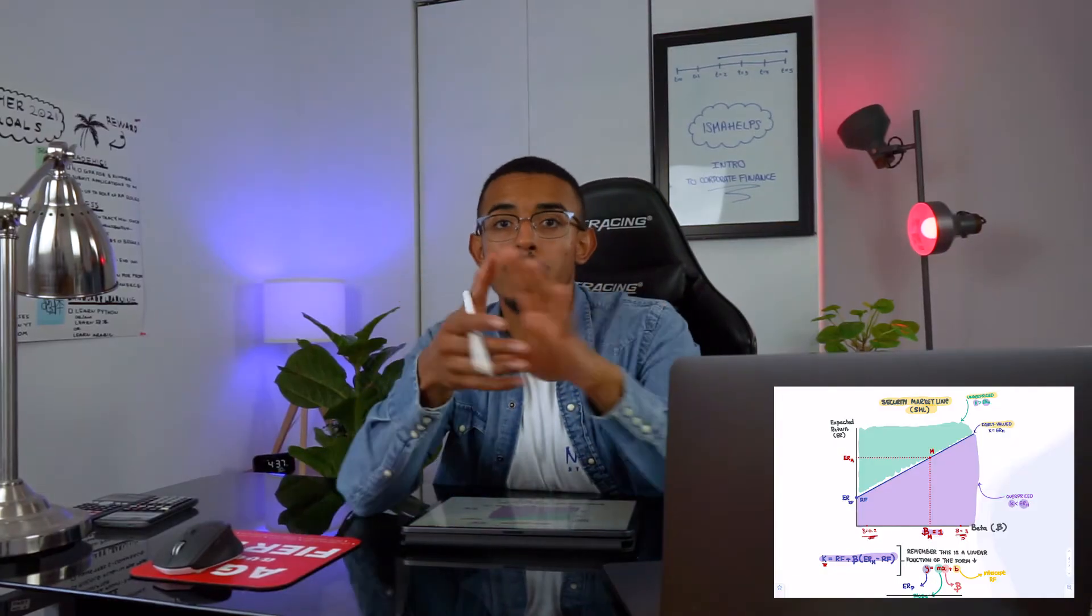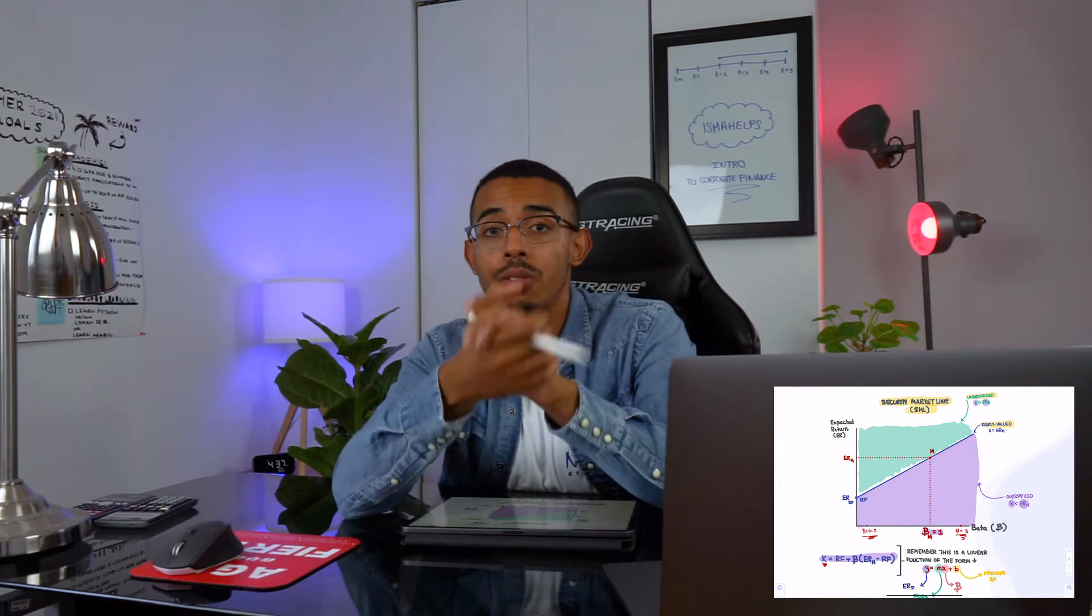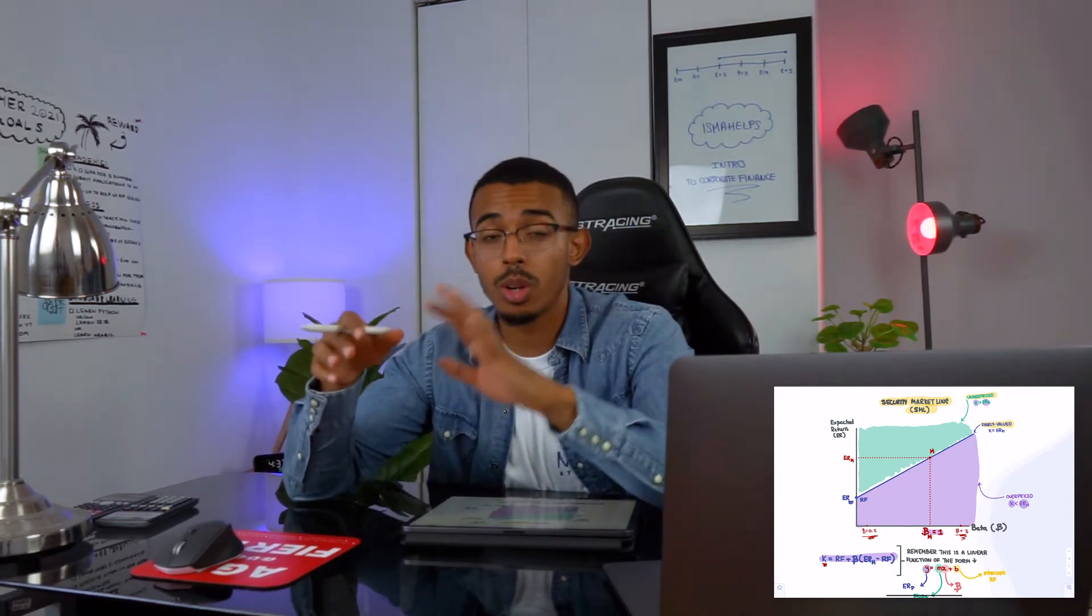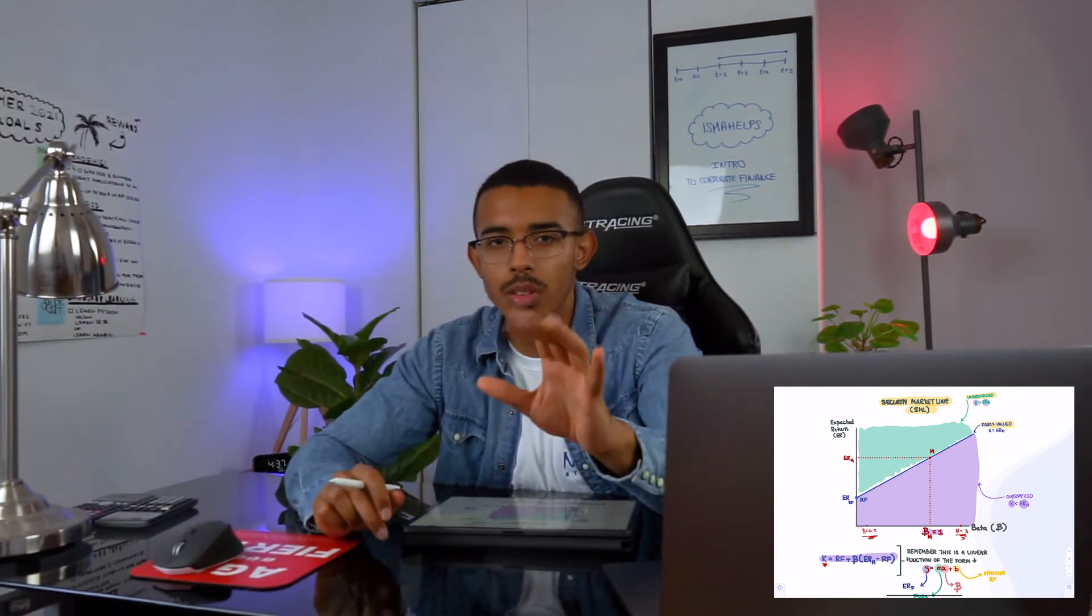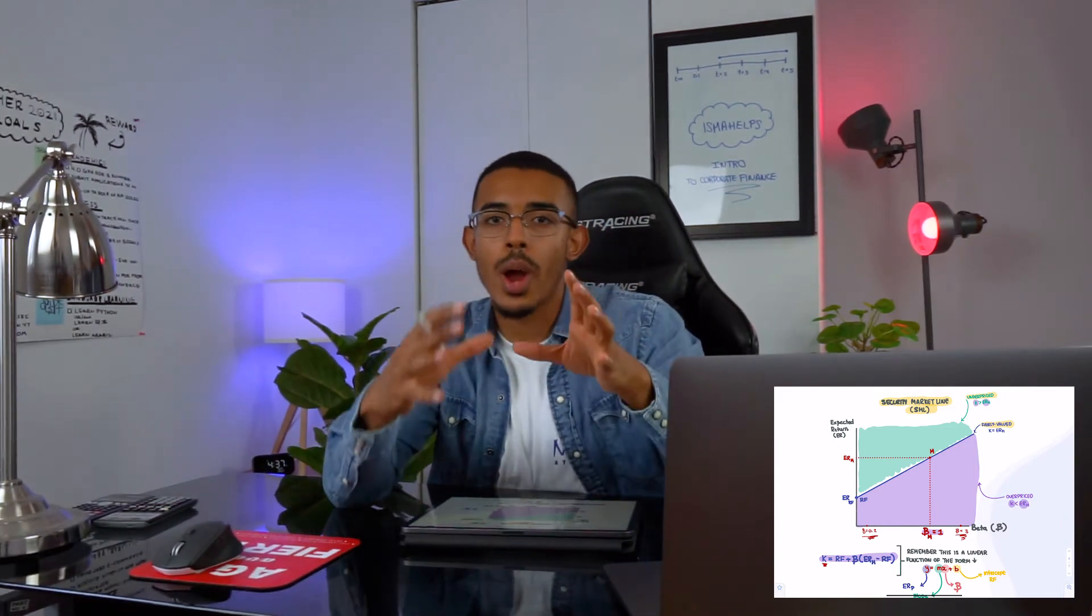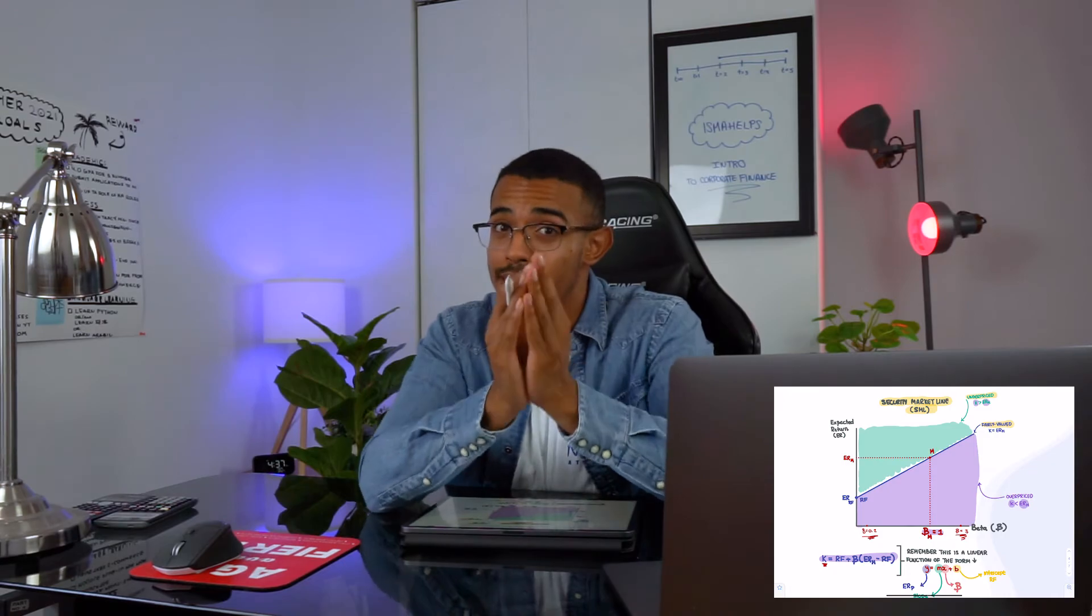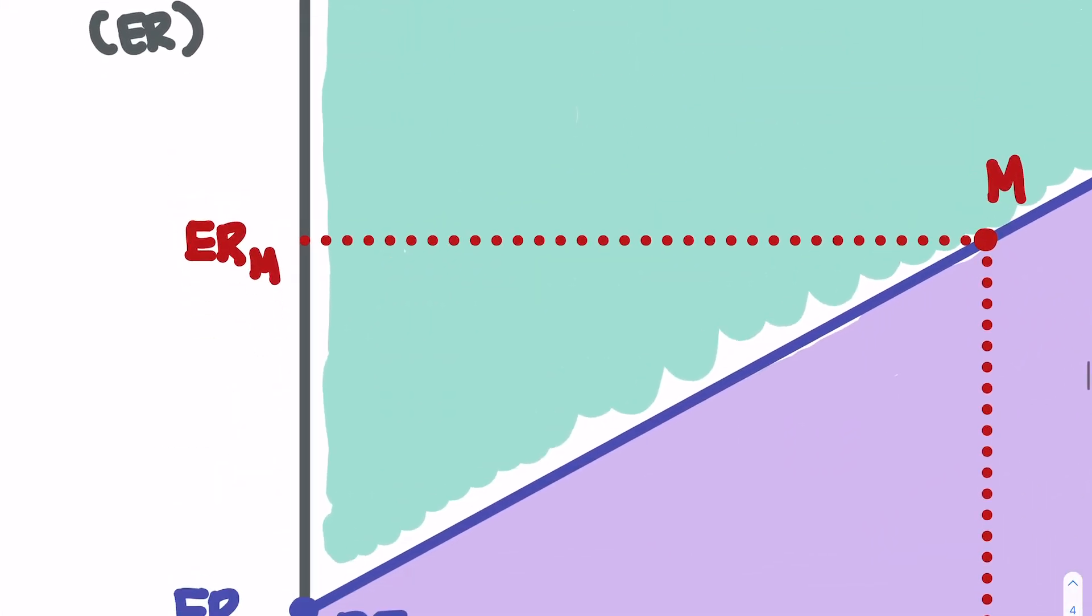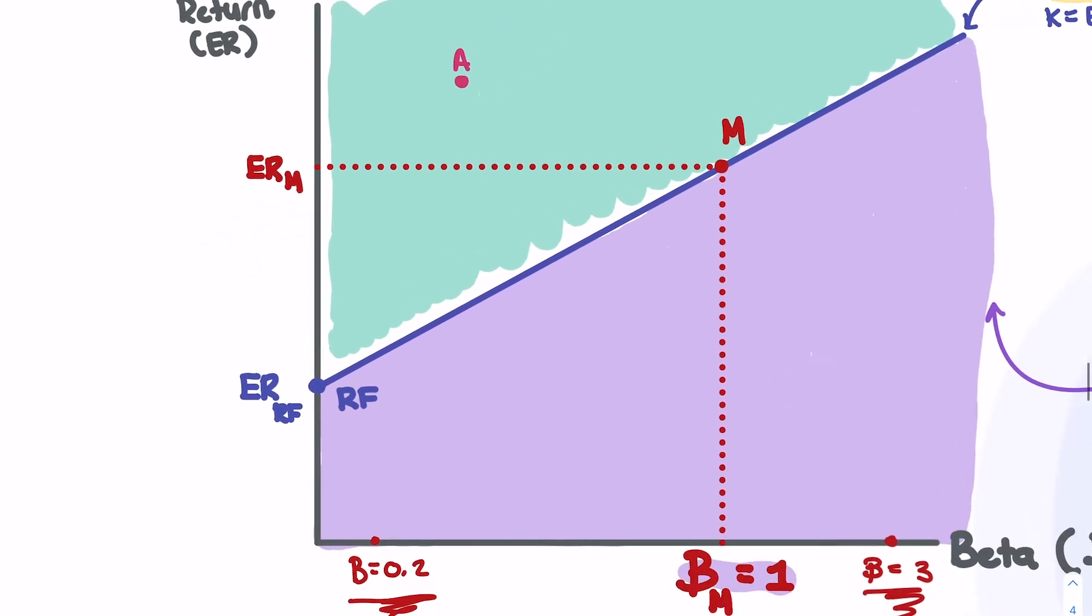So let's look at three different scenarios in which we're going to get a better feel of what it means for a stock to be undervalued, fairly valued, and overvalued. We're going to take three different points, and we're going to make sense of them in real time with our graph. This is something that you may want to do on your exam. So let's take a random point, call it right here, point A.